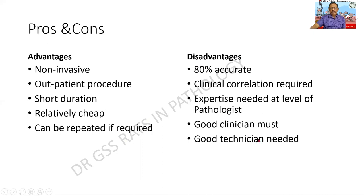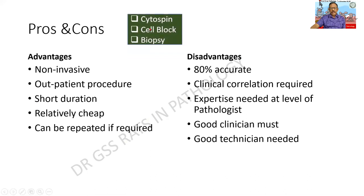If the sampling is not adequate, the report is wrong. If the clinician does not offer a good description, the pathologist finds it difficult to proceed. Sometimes we can prepare what is called a cytospin or a cell block. And if it is only 80% accurate and malignancy is suspected, later on a biopsy can also be done.